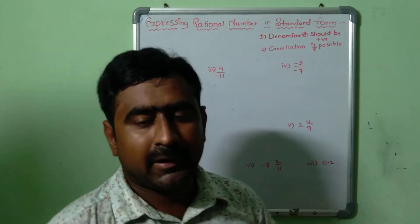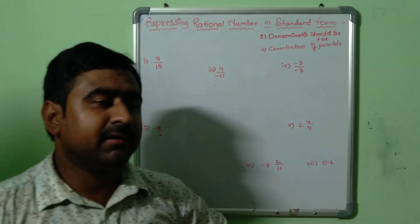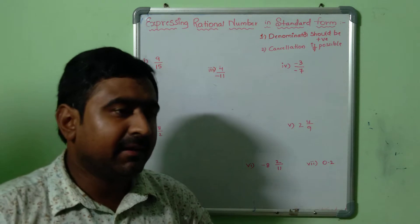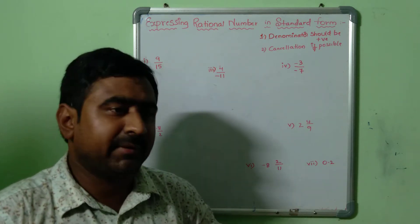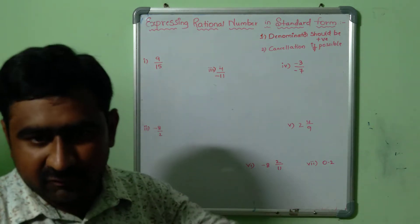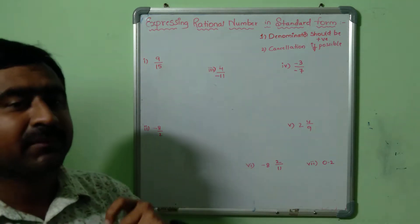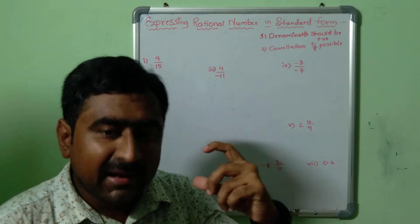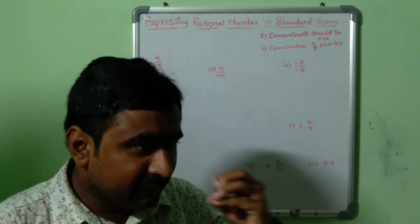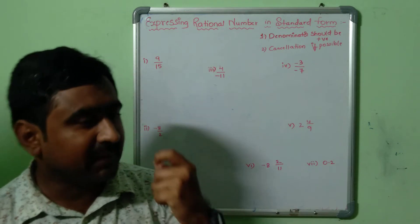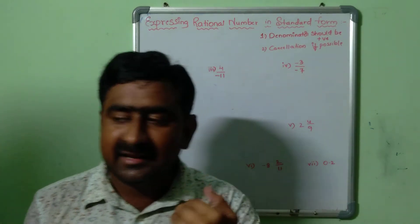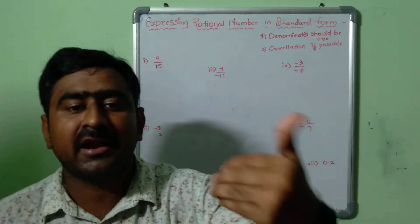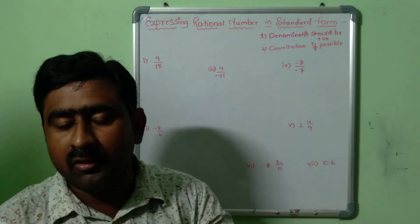Good evening everyone, welcome back to our class. Today in this session we are going to discuss an important concept regarding rational numbers in mathematics. The topic we are going to discuss right now is about the standard form — expressing a given rational number in its standard form, and how we are going to convert a given rational number into its standard form.